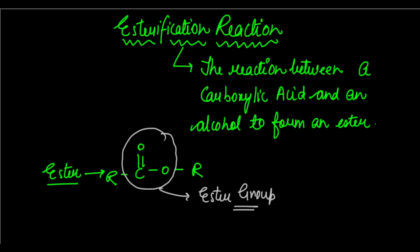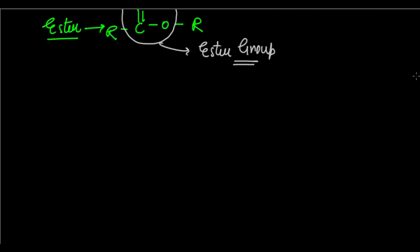The most prominent example of an esterification reaction, which is given in the textbook as well, is the reaction between ethanol and ethanoic acid. The point behind organic reactions is that you can understand a general mechanism, and when you understand that process, you will be able to predict the products of any kind of reaction.